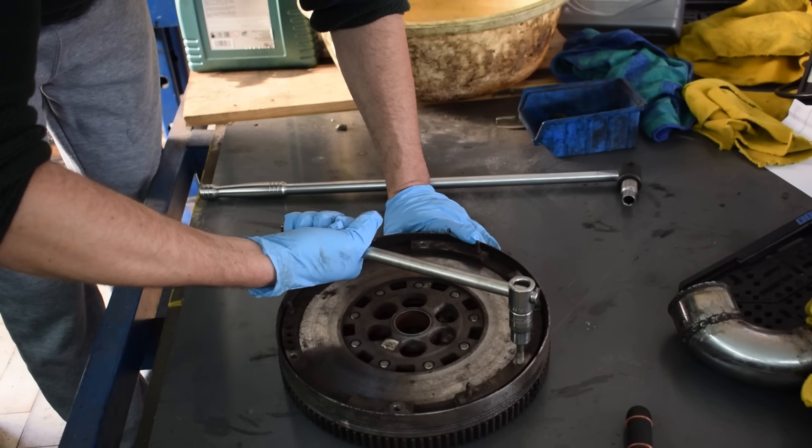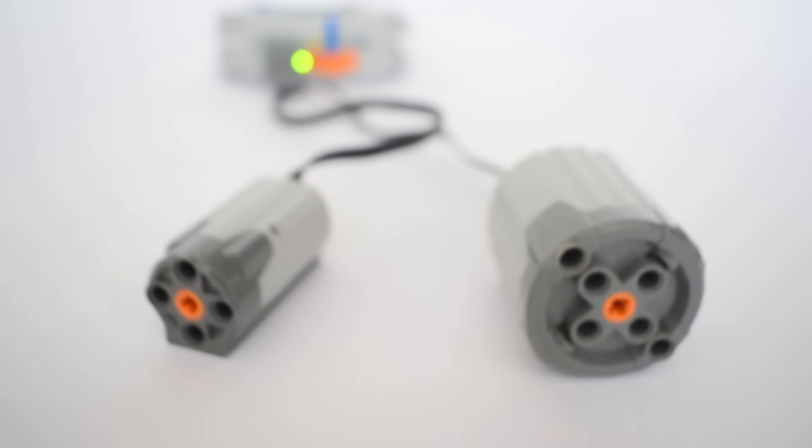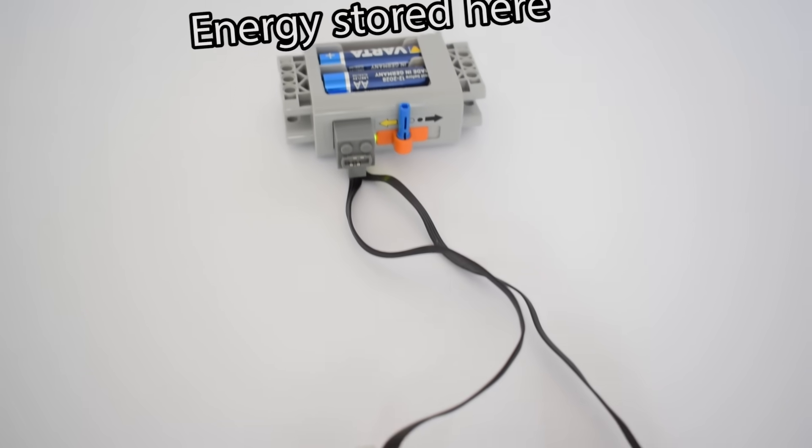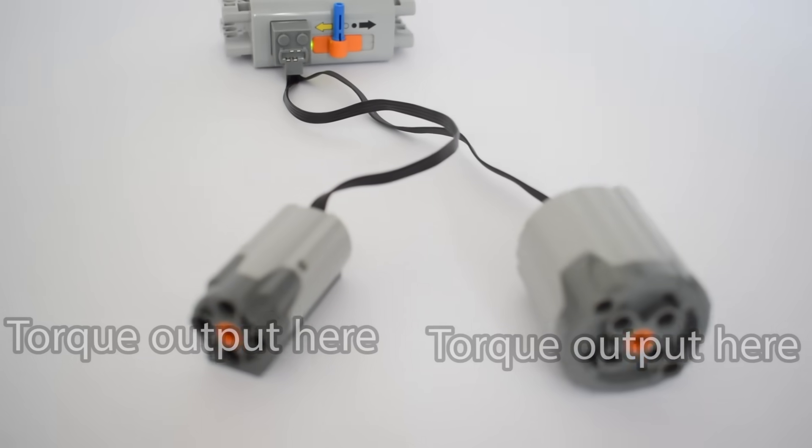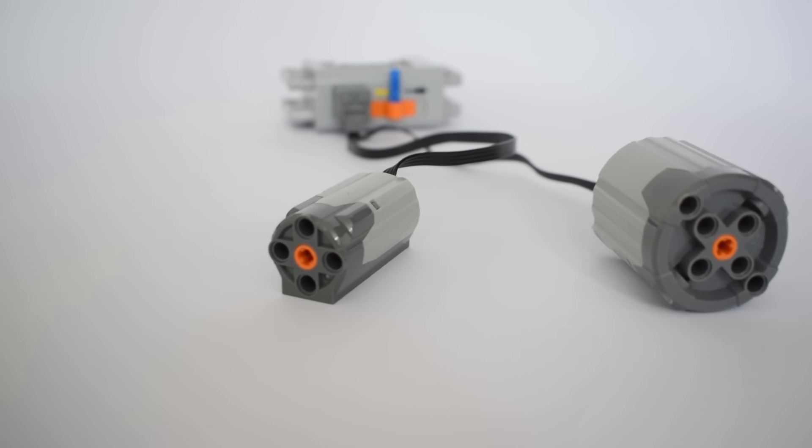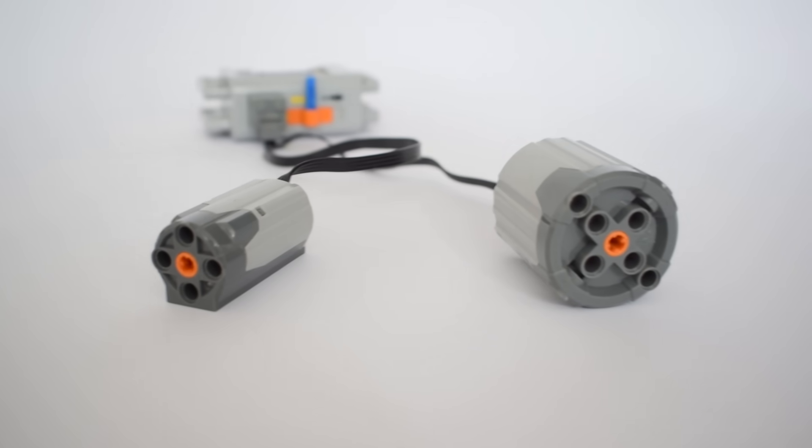So in this scenario, I'm using the stored energy in my muscles to generate torque at the bolt. Our Lego motors are doing the same thing. They're using the electrical energy stored in these batteries to generate torque or rotational force. And as we have seen, our large Lego motor is outputting more torque than our small motor.